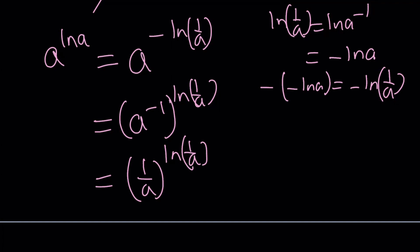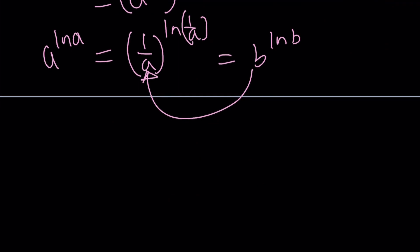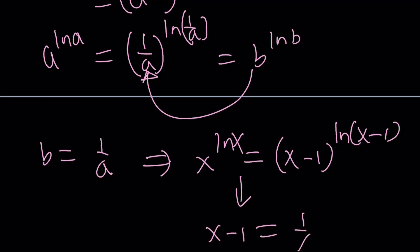From here, we get the following. If a^(ln a) = b^(ln b), then b becomes 1/a, because b = a obviously doesn't work if a and b are equal, or if a equals a - 1, it's not good. So b = 1/a is one of the solutions, which means, if x^(ln x) equals (x-1)^(ln(x-1)), this implies that x - 1 = 1/x. So from here, we get a quadratic equation.